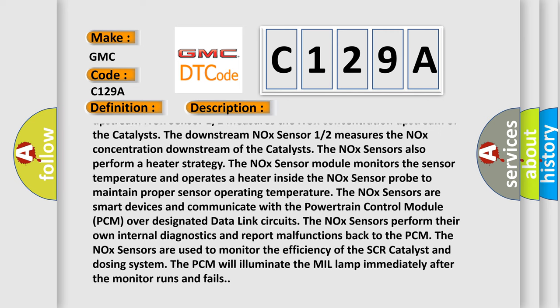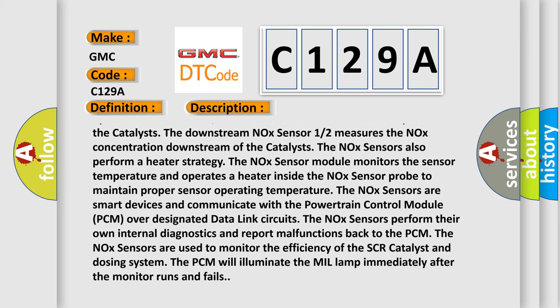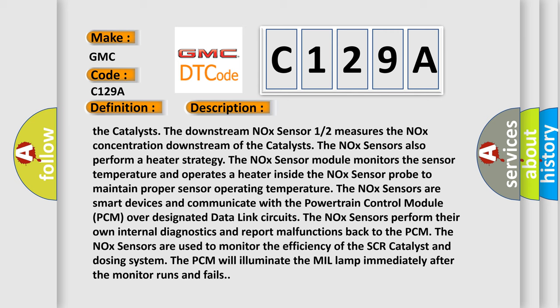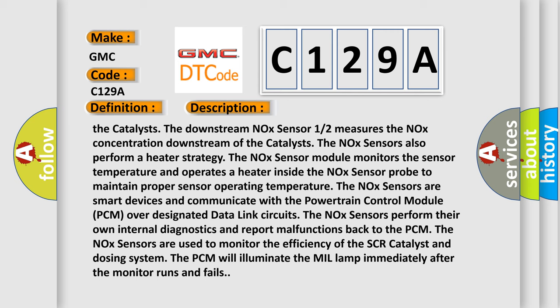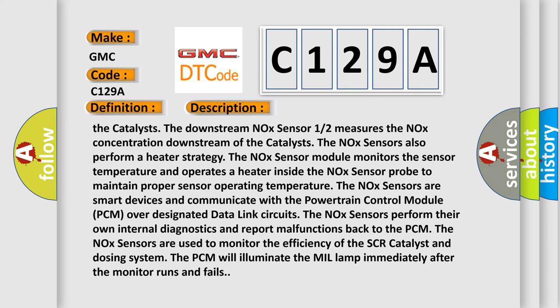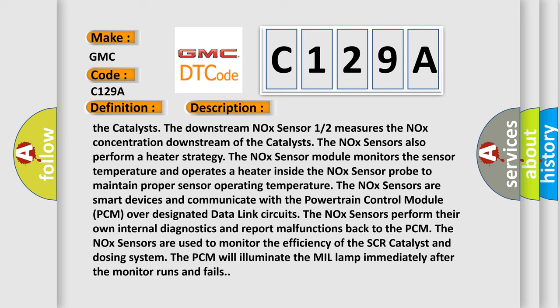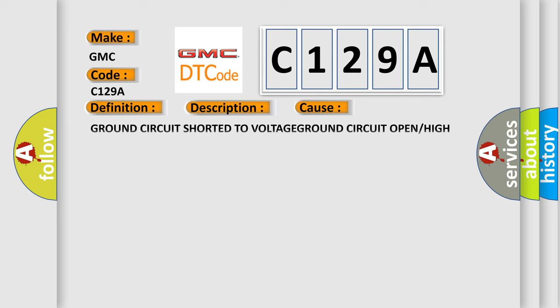The NOX sensors perform their own internal diagnostics and report malfunctions back to the PCM. The NOX sensors are used to monitor the efficiency of the SCR catalyst and dosing system. The PCM will illuminate the MIL lamp immediately after the monitor runs and fails. This diagnostic error occurs most often in these cases: ground circuit shorted to voltage, ground circuit open or high resistance, NOX sensor 1 or 2.